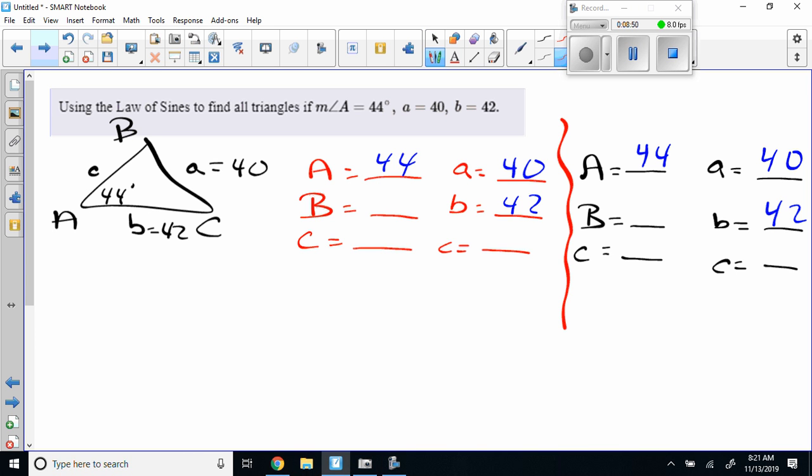So, what am I solving for? I'm solving for angle B, right? So, if I'm doing that, I can go B is 42, the sine, well, get it back up. That's 42, the sine of 44 over 40, right? Somebody tell me what that is. Inverse sine of 42, sine of 44 over 40. 46.84. 46.84.